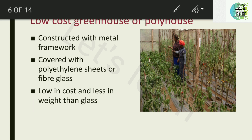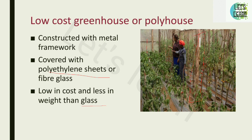The low-cost greenhouse is constructed with a metal framework or wooden framework. In this framework, it is covered with a polyethylene sheet or fiberglass. The polyethylene sheet is low in cost and less in weight than glass. This type of low-cost greenhouse is most commonly used for short-term benefits.